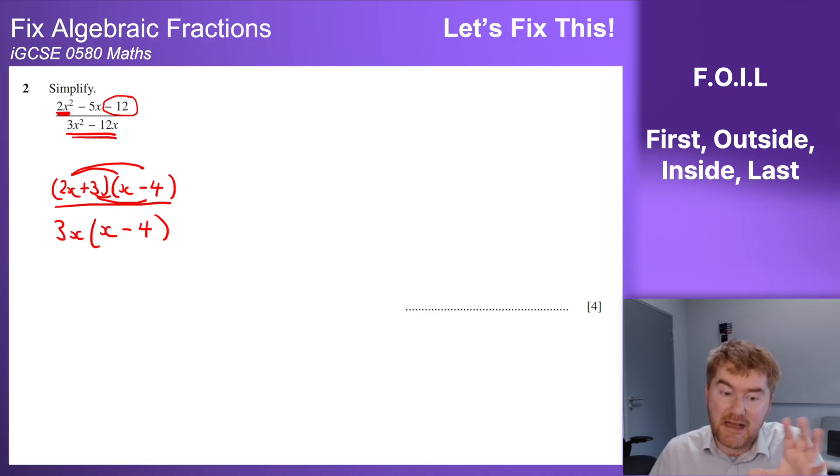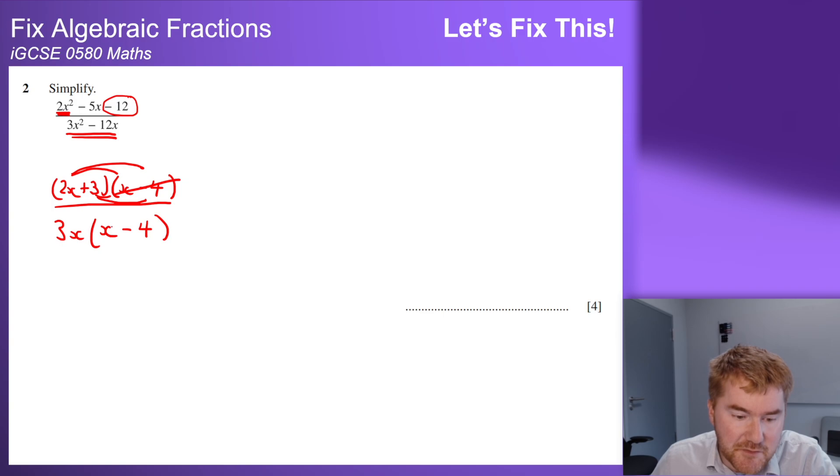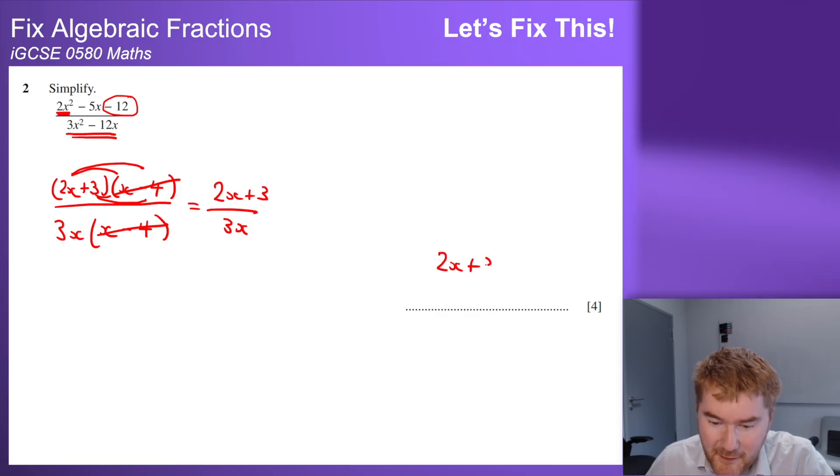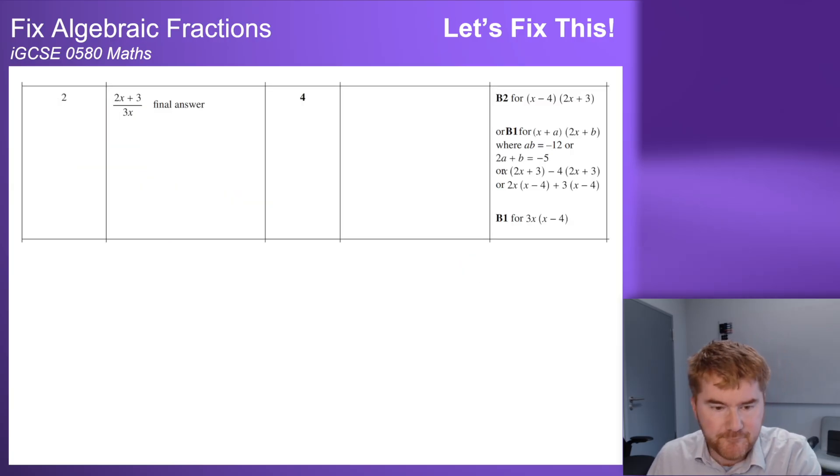Notice we have the same situation as before: we cancel through and we're left with our answer of 2x plus 3 over 3x. Be nice to the examiner and just pop it over on the right-hand side so we get all four marks. Again, there's the answer, final answer. You've now got four marks in more or less 60 seconds. That's a really good time-to-mark ratio. I'm a mathematician, I like talking about ratio.